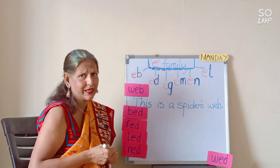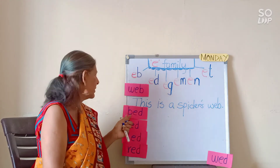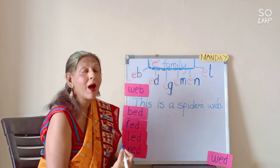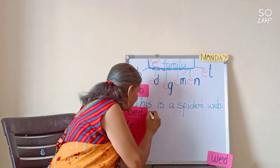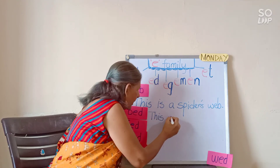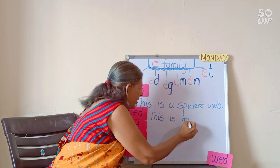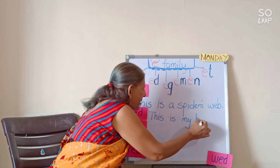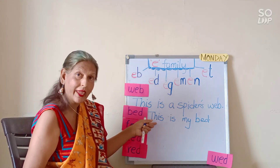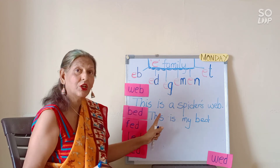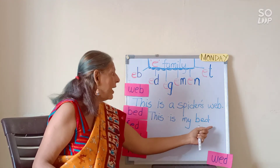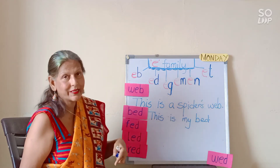Now let's make a sentence. Let's frame a sentence with the first word — B, Ed, Bed. The sentence is: 'This is my bed.' Again, T with a capital letter, space between each word, the sentence makes sense, and a full stop to end the sentence.